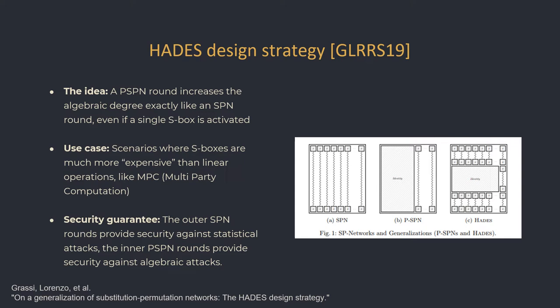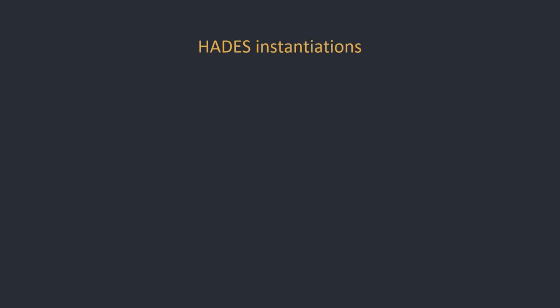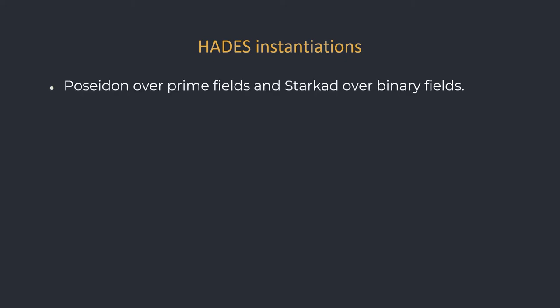This design is meant for cases in which the main computational bottleneck are the S-boxes, and the linear layers take negligible time in comparison — like in MPC. Hades is a generic design and not a specific cipher, so let's talk about its instantiations, namely Starkad and Poseidon.